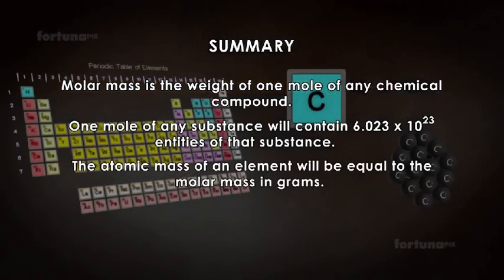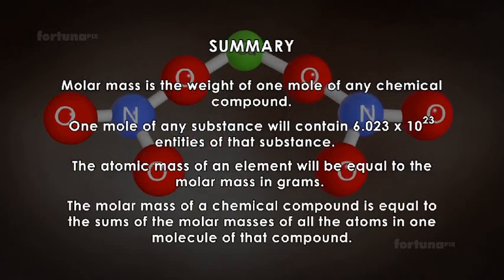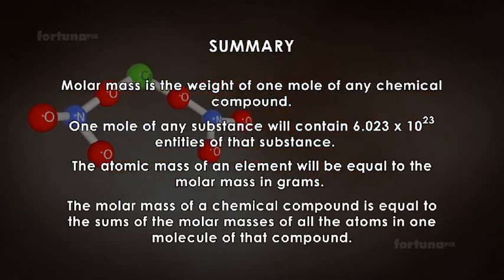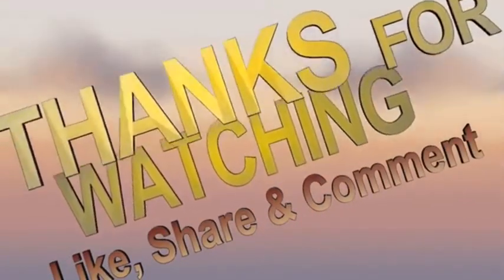The atomic mass of an element will be equal to the molar mass in grams. The molar mass of a chemical compound is equal to the sums of the molar masses of all the atoms in one molecule of that compound.